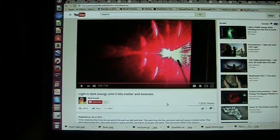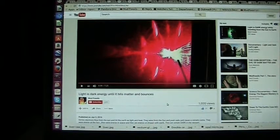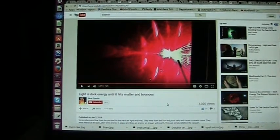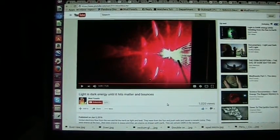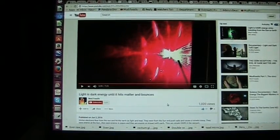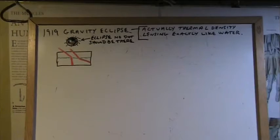Light is dark energy until it hits matter and bounces. Anyway, that's what it is. I mean, the vortex theory, I have a vortex theory about this, and I think it's on this video too. But I have all the evidence about it. And light has to be dark energy and dark matter, as it has to be.